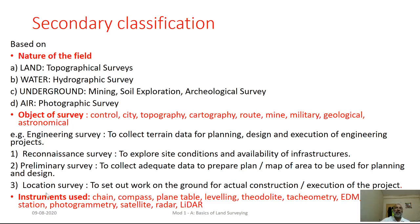The third category of classification is instrument-based survey. Whatever equipment we use defines the type — for example, using a chain for linear measurements gives us chain survey; using a compass to determine bearings or angles gives compass survey; combining chain and compass gives chain and compass survey. Similarly, there will be plane table survey, leveling survey, theodolite survey, tacheometry, and many other categories, which will be discussed in depth as we proceed further.